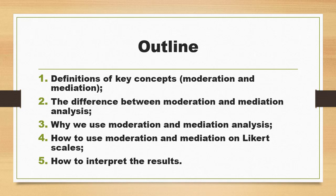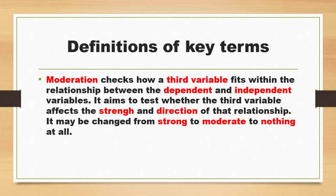This tutorial is going to be mainly theoretical, so stay tuned for the practical part later. As key definitions, moderation checks how a third variable fits within the relationship between the dependent and independent variables. It aims to test whether the third variable affects the strength and direction of that relationship — it may change from strong to moderate to nothing at all.